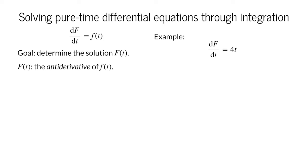For our example function, it's pretty easy to undo the differentiation. The antiderivative of 4t is the function capital F of t equals 2t squared. You can try it yourself. If you differentiate capital F of t, you will get 4t.